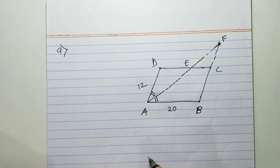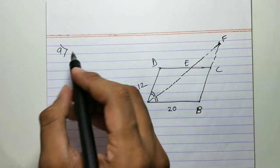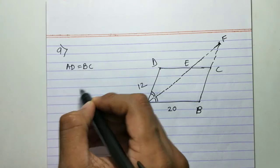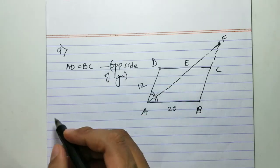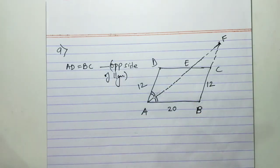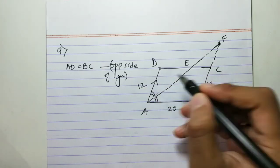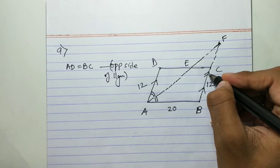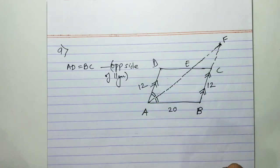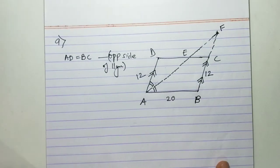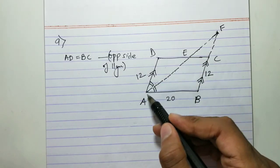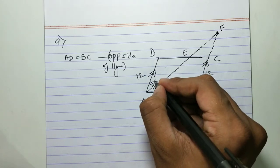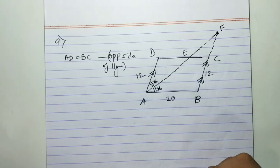Since ABCD is a parallelogram, opposite sides are equal, so AD = BC = 12 cm. The opposite sides are also parallel. The bisector of angle A divides it into two equal parts — let's say if one part is x, the other is also x.